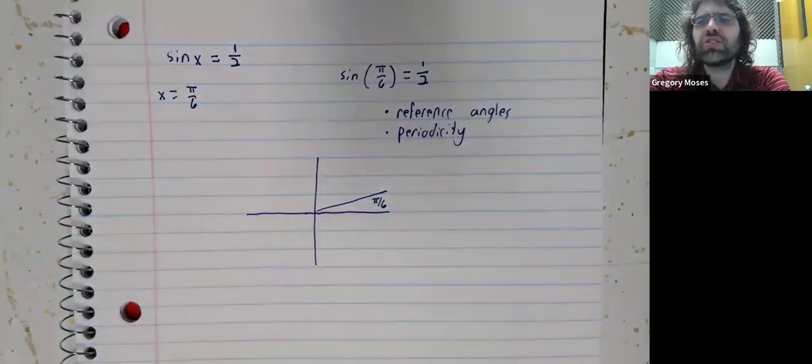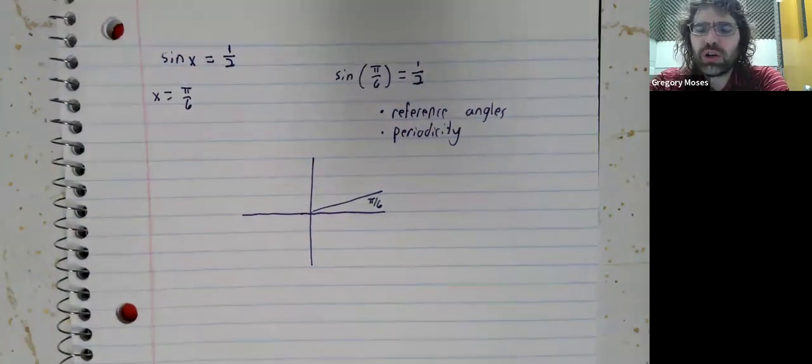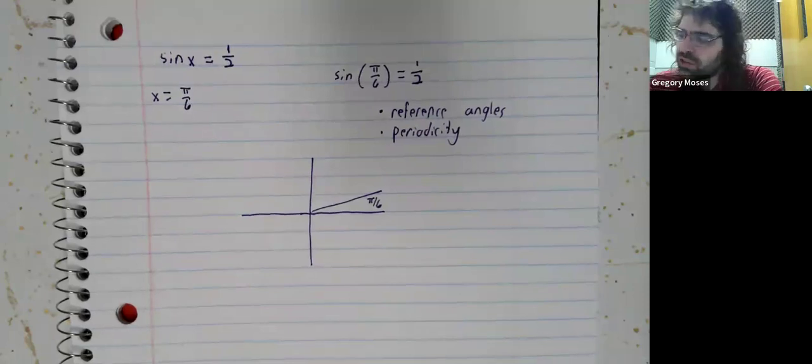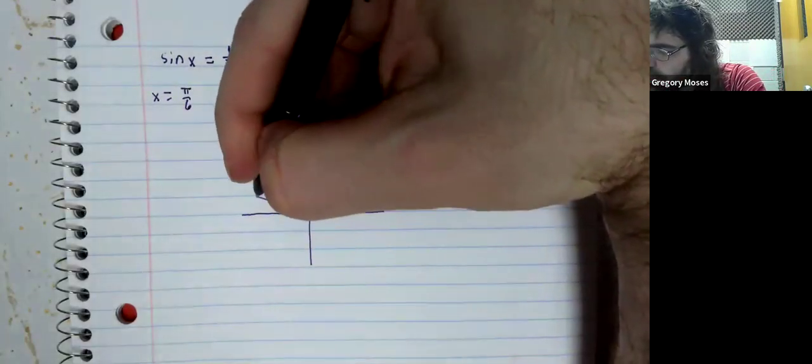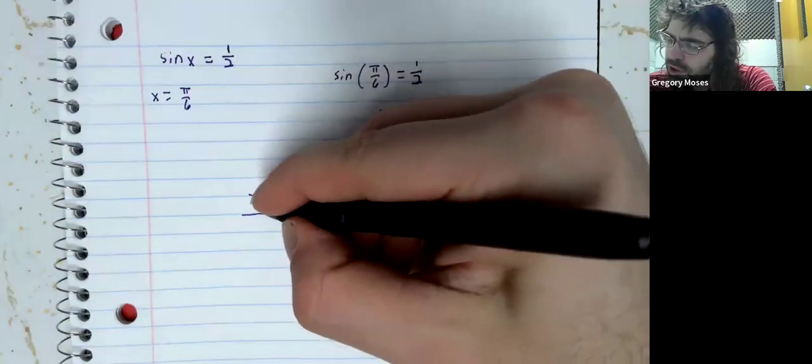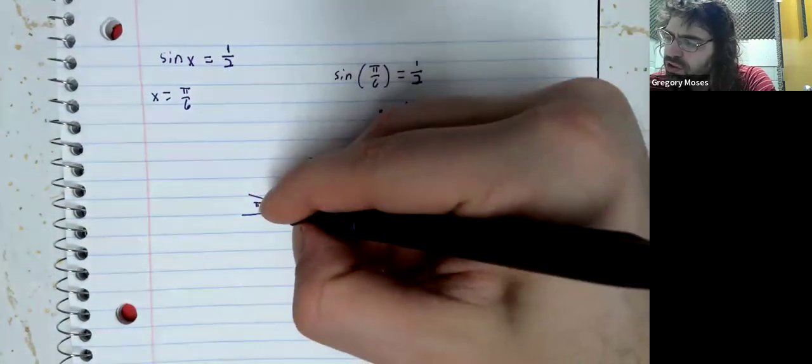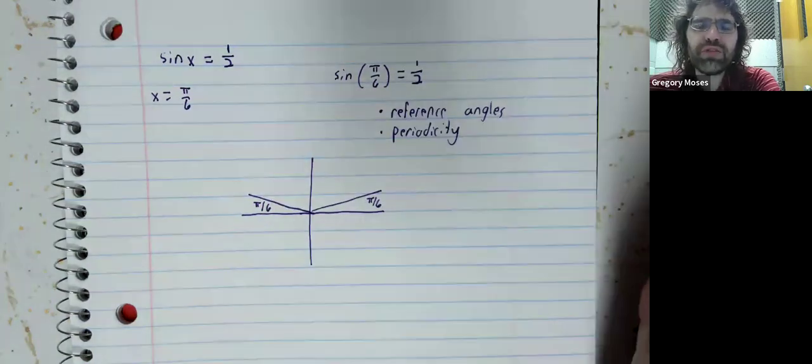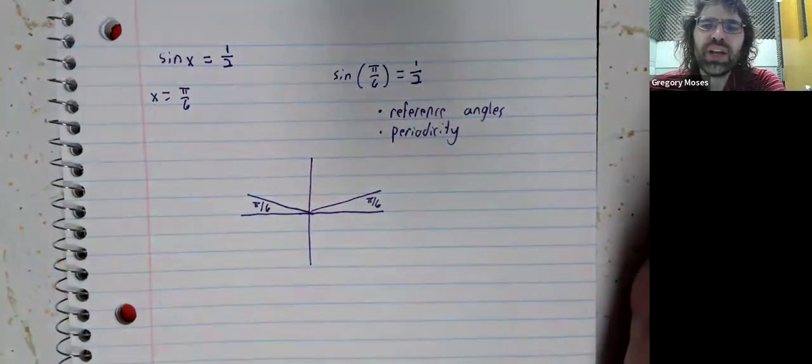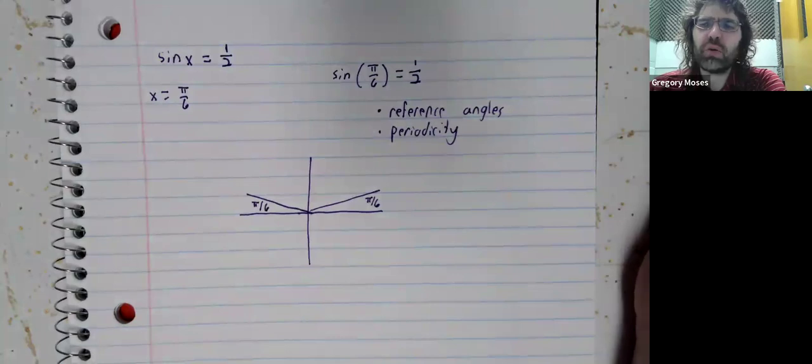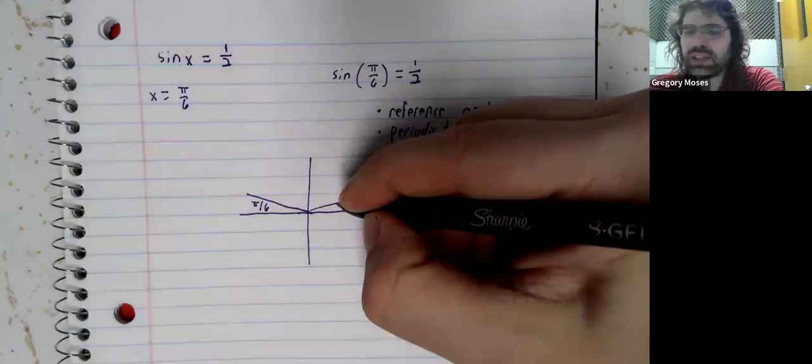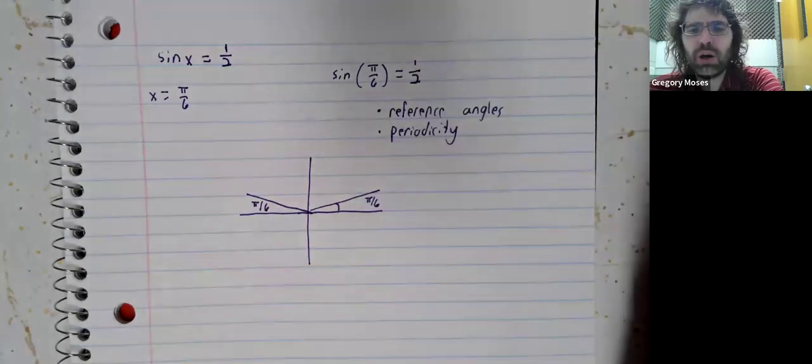But it's not the only answer to the equation. And that's because two angles that have the same reference angle have the same trig values, plus or minus a sign. So, pi over six in the first quadrant.